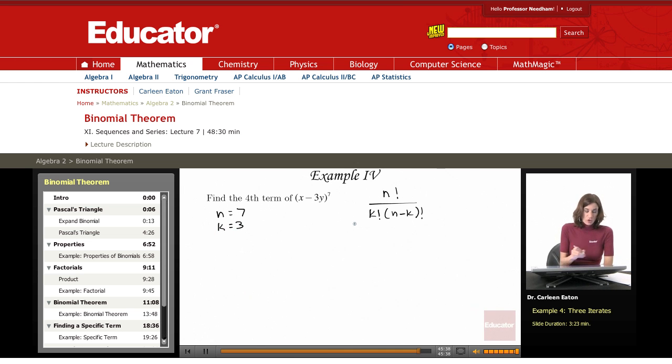This is going to give me the coefficient for a term in this form. It's going to have the coefficient, and then it's going to have x raised to the n minus k power times negative 3y raised to the k power.